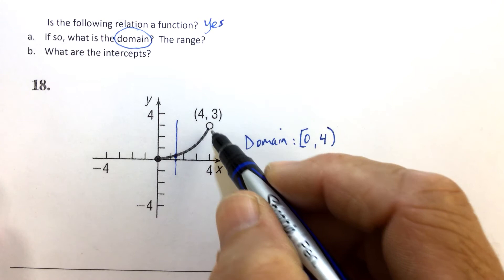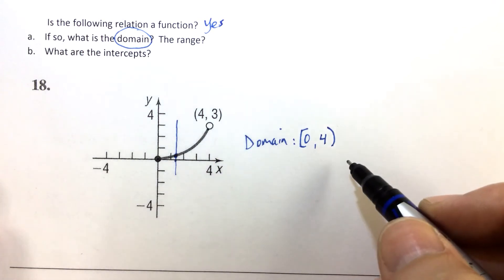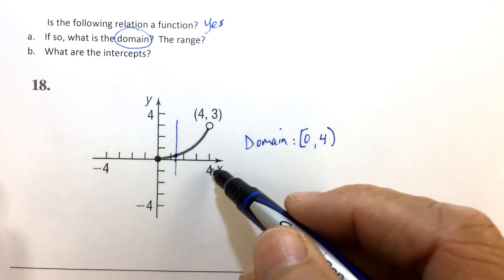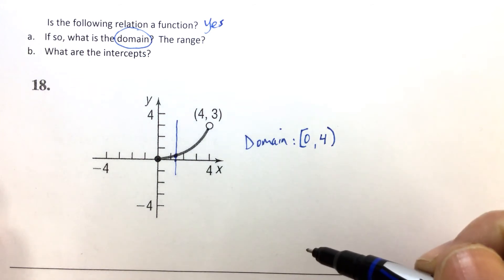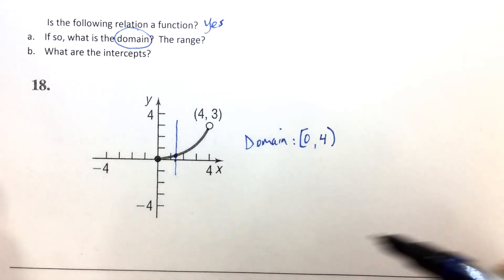that's not okay. Again, the open circle shows there is no output when you input a 4. So we don't include 4 as part of the domain.